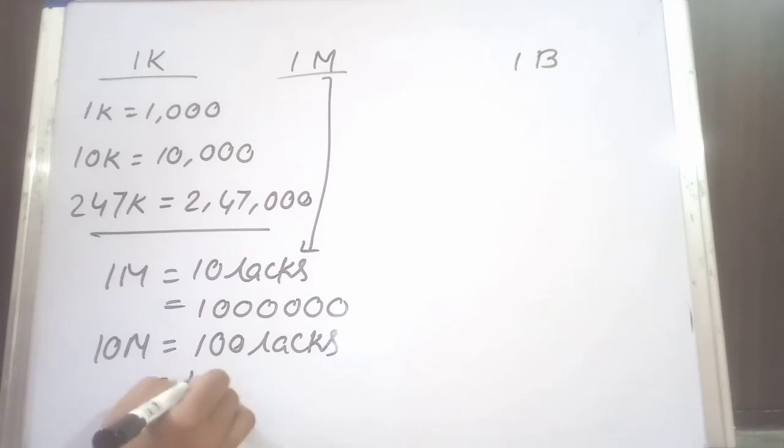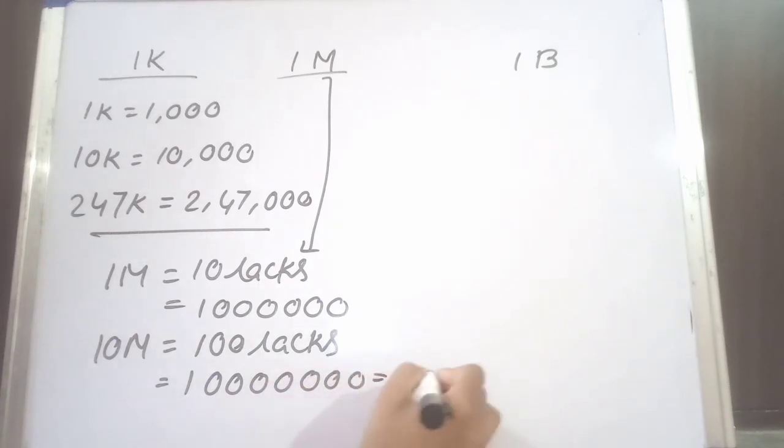That means 1 followed by 7 zeros: 1, 2, 3, 4, 5, 6, 7. 1 followed by 7 zeros means 1 crore.